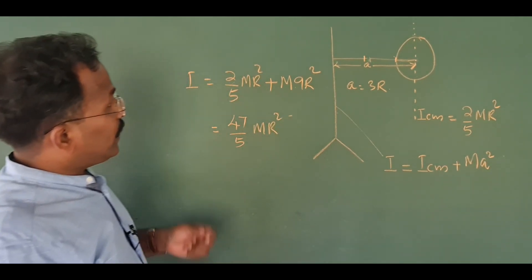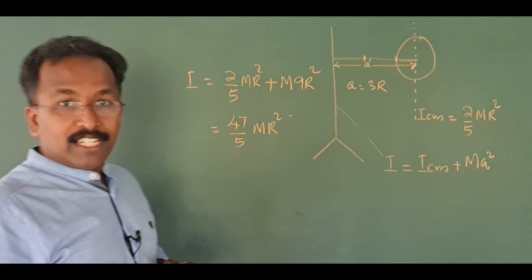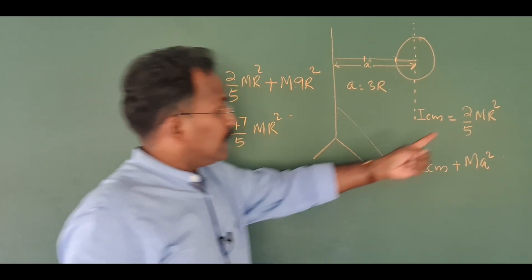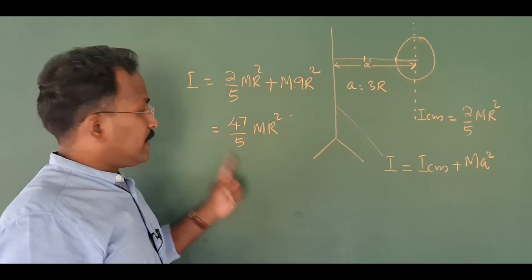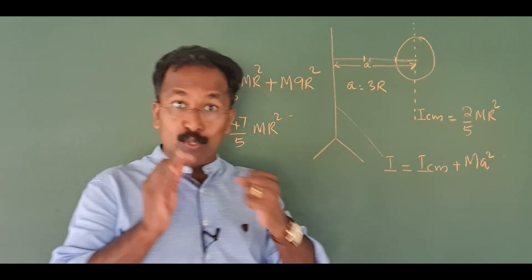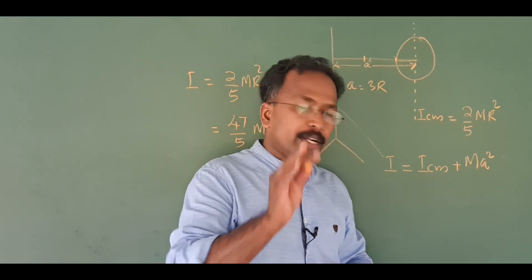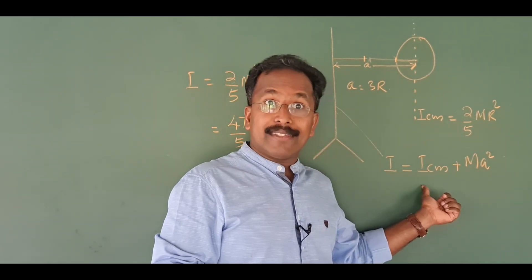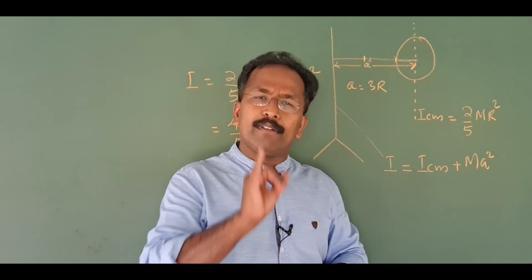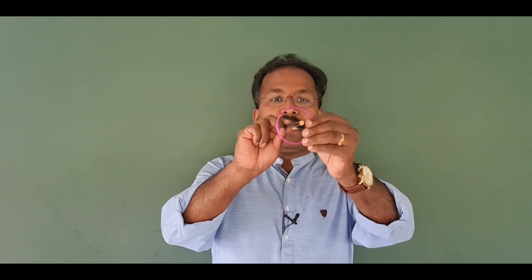So the moment of inertia about the center axis is 2 by 5, but with the parallel axis at distance 3R it becomes 47 by 5. That is the moment of inertia. In 5 minutes, I will say something about the ring and we are going to finish the moment of inertia topic. The moment of inertia here is mR squared.